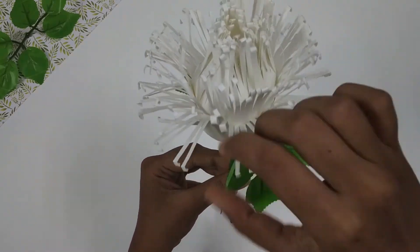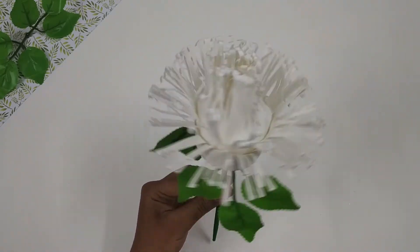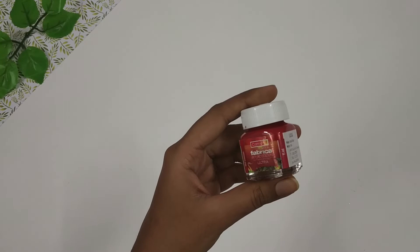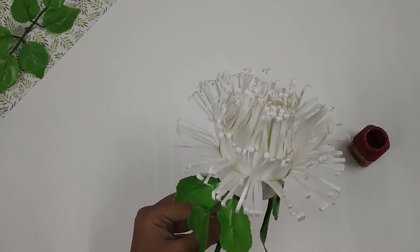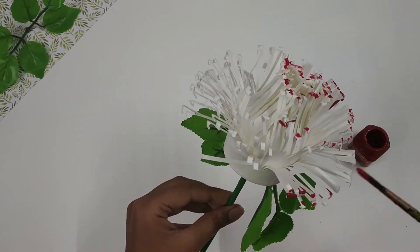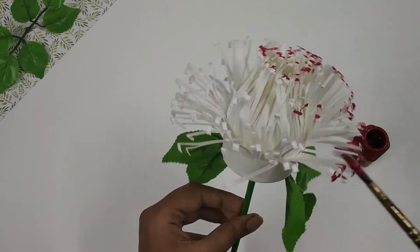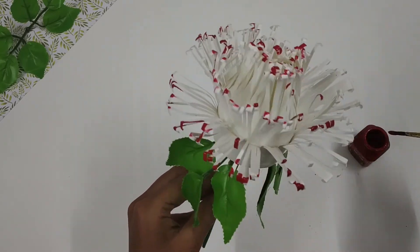This is how the flower looks. You can leave it like this, but I'm going to add a little pop of color to it. I'm taking some red acrylic paint and I'm going to apply it just on the tip of the flower like this. This step is completely optional and you can use any color you want your flower to be.